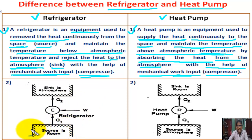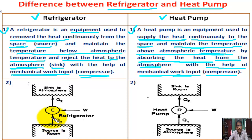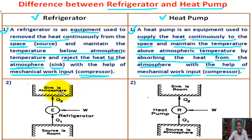In the figure, number two, for the refrigerator: the required space is the source — this is the room — and the atmosphere is the sink. Q1 is the amount of heat removed from this space with the help of mechanical work input by the compressor. Q2 is the amount of heat rejected to the atmosphere, which is the sink. Q2 equals Q1 plus W.